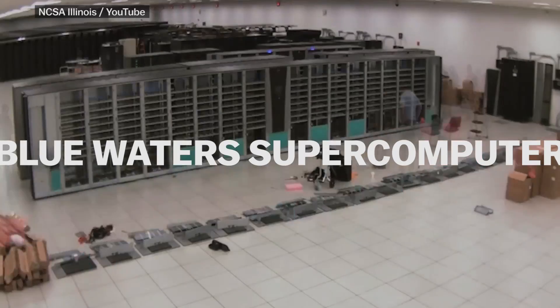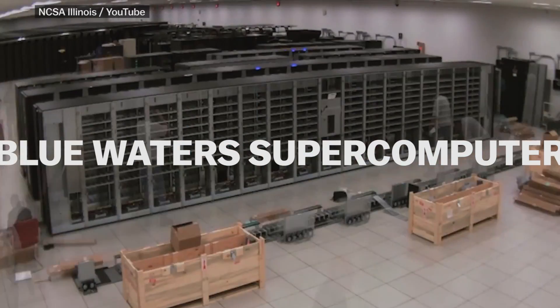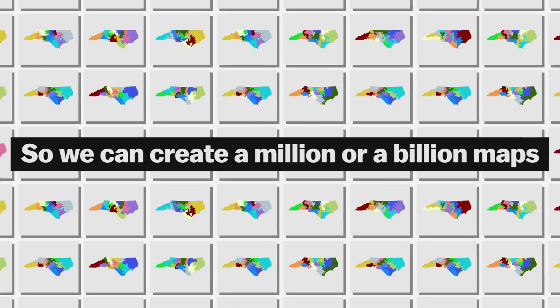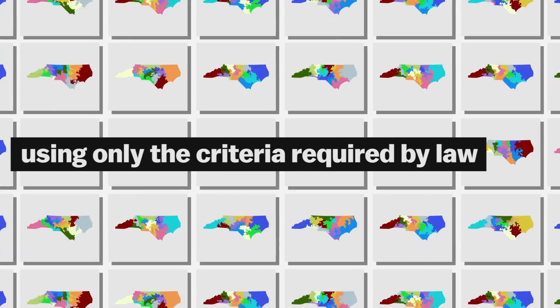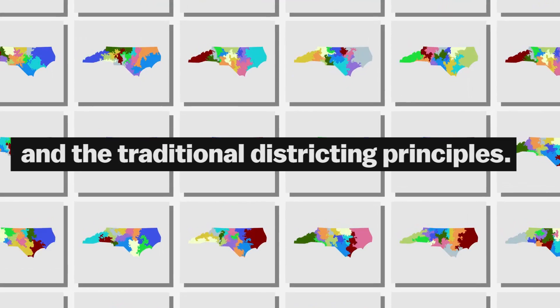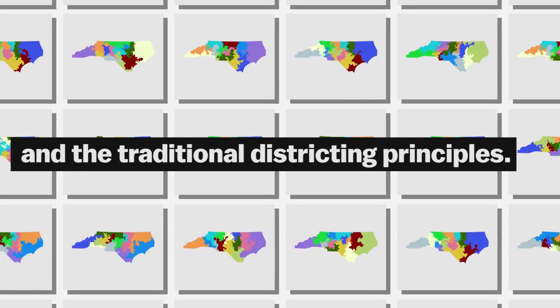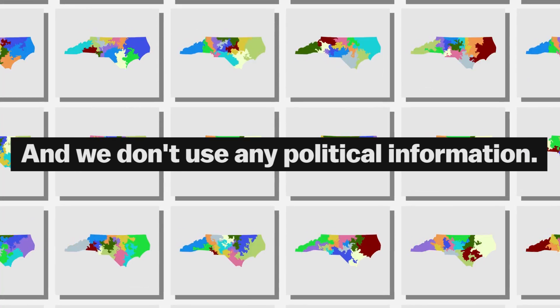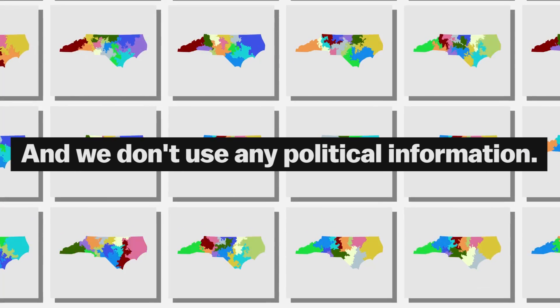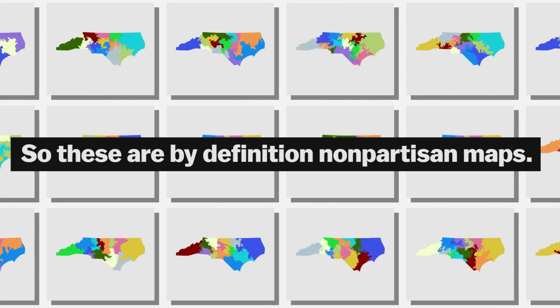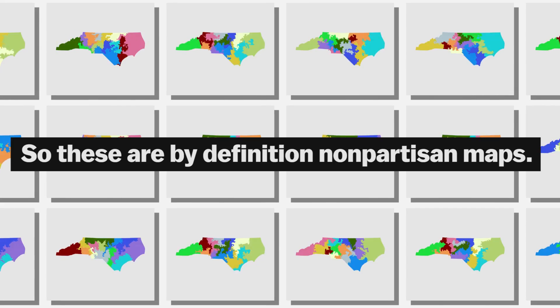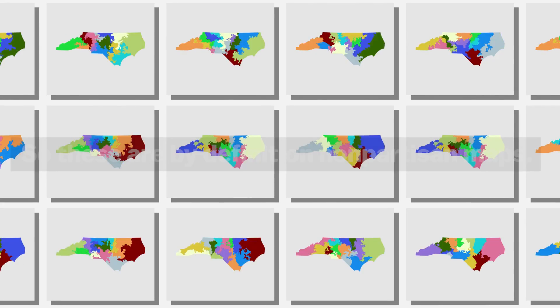Wendy's team is using a supercomputer to generate district maps based on those criteria. We can create a million or a billion maps using only the criteria required by law and the traditional districting principles, without using any political information. So these are by definition nonpartisan maps.